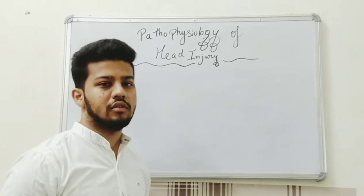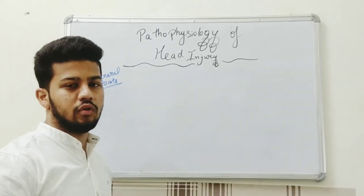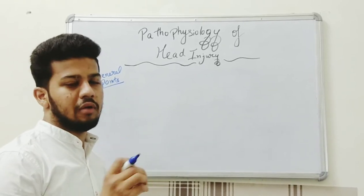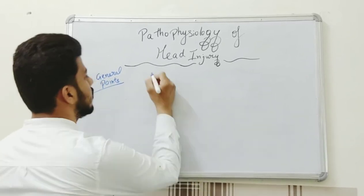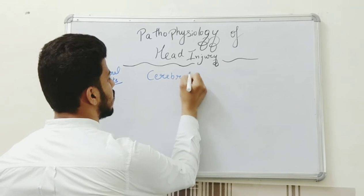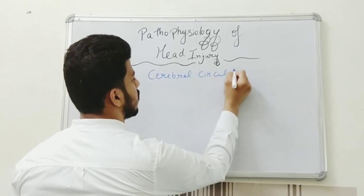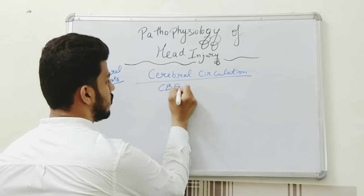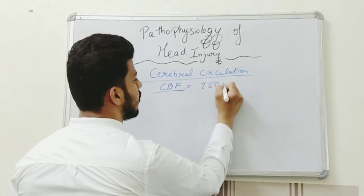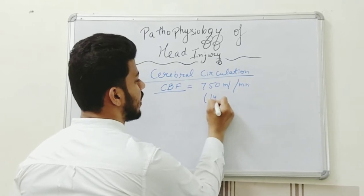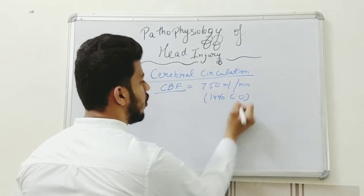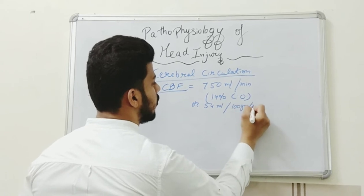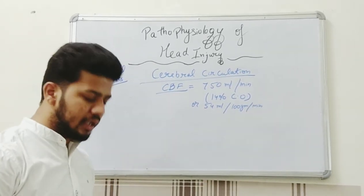First, we will learn about cerebral circulation, which is very important. We cannot compromise blood flow towards the brain because the brain is sensitive to hypoxia. If blood flow stops for just 10 seconds, brain death can occur. Cerebral blood flow is mostly 750 ml per minute, which is 14% of cardiac output, or 54 ml per minute per 100g.